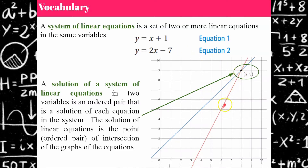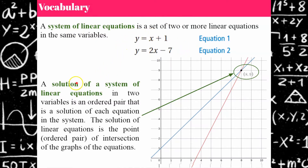So you graph the first one, you graph the second, they intersect, and this ordered pair is the solution. We'll explain more in the lesson. Understanding our two vocabulary words: first you have a system of linear equations, which is two or more — and today we'll focus on just two — and then the solution. When you're asked for the solution, you're always giving an ordered pair.